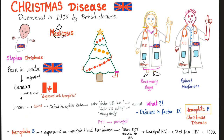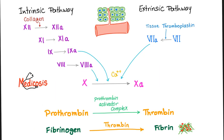Stephen Christmas went back to Canada and was dependent on multiple blood transfusions due to his hemophilia. HIV screening of blood did not exist back then — HIV/AIDS was only discovered in 1981. He developed HIV and died in 1993. In summary: hemophilia A is factor VIII, hemophilia B is factor IX, hemophilia C is factor XI.